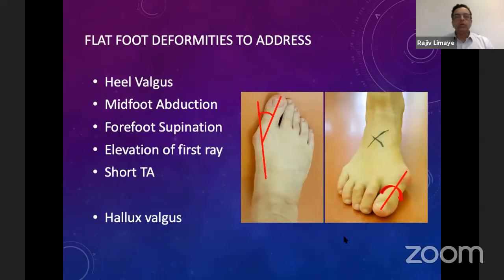When patients don't respond to physiotherapy and non-operative treatment and the condition becomes more deformed, there are various deformities we need to address. These include heel valgus, midfoot abduction, forefoot supination, elongation of the tendon leading to shortening of the tendo-Achilles, and elevation of the first ray. Associated hallux valgus deformities can also be seen with this condition, and there may be other joint deformities such as knee deformities.